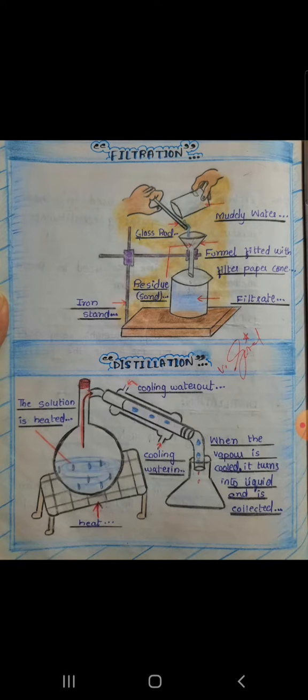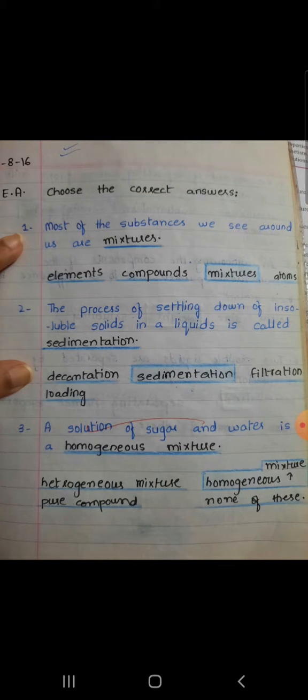search on the net and then draw it. Now we will be doing Exercise A: Choose the correct answer. Number one - most of the substances we see around us are mixtures. Number two - the process